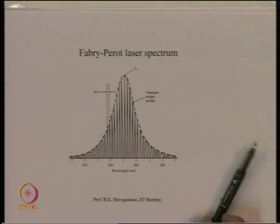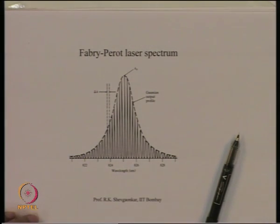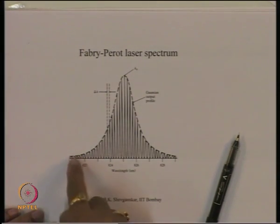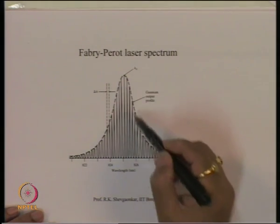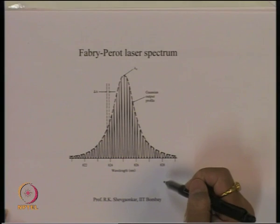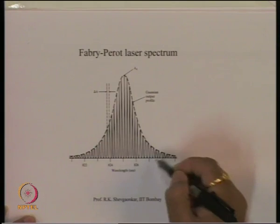If we look at the spectrum of this structure, this is the spectral width obtained intrinsically because of population inversion, and these are the lines that satisfy the phase condition.